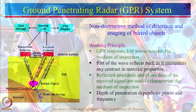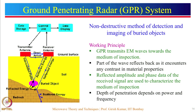Lastly, we move to the ground penetrating radar or GPR system. This is a non-destructive method of detection and imaging of buried objects. The system has two antennas — a transmitter antenna and a receiver antenna — both placed on the ground surface while the objects are buried inside the soil.